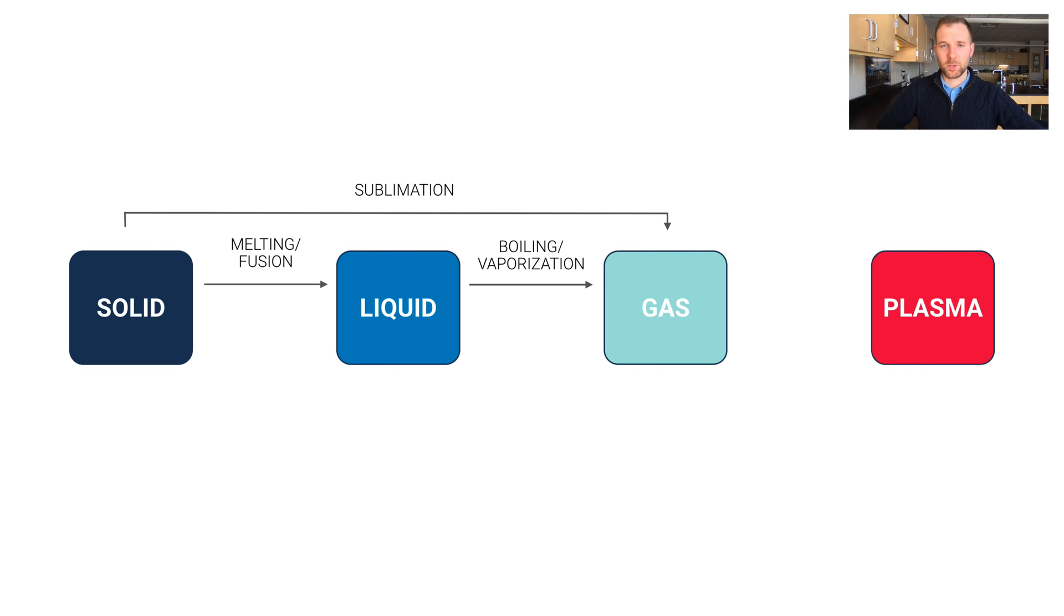To take a gas and to turn it into a plasma, we call that ionization, because we're turning that gas into ions. That's where the name ionization comes from. All right, great. So this is from left to right as we're heating something up. What happens if we cool it down? Let's go in this direction now.